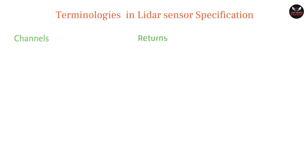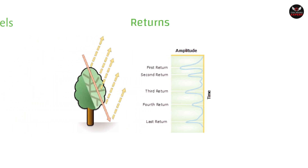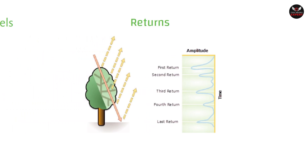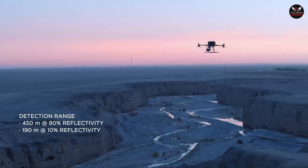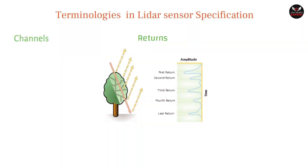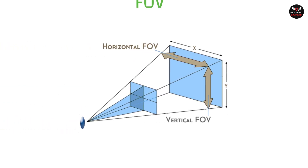Now let's discuss returns. The laser pulses emitted by the LiDAR sensor hit the ground and other objects before returning to the sensor. For example, in a forest area, the laser light hits the top of the tree first, then branches, and finally the ground. This concept is known as returns, as you can see on the screen. Now let's discuss field of view (FOV). This refers to the area captured by the camera or LiDAR sensor without moving it, generally measured in degrees and can be horizontal or vertical.